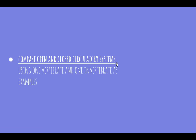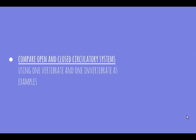Welcome to the next video in the Patterns in Nature topic. This video is going to be addressing the dot point: compare open and closed circulatory systems using one vertebrate and one invertebrate as examples. So it's another compare dot point, and we need to look at the similarities and differences between open and closed circulatory systems, examining one vertebrate and one invertebrate example.